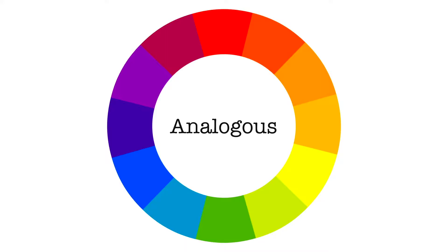Next are analogous colors. These are situated next to each other on the color wheel and are good for monochromatic compositions. They consist of a dominant primary color, a supporting color which is usually a secondary or tertiary color, and a third one which is a mix of the first two.